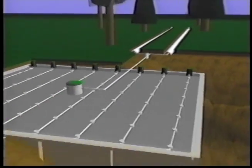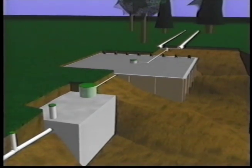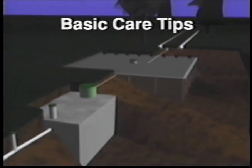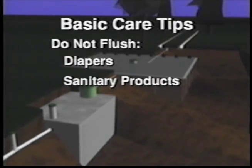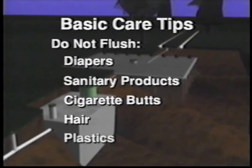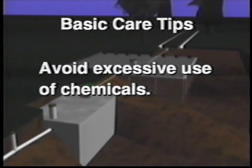Like any household appliance, your ISF system needs some regular maintenance to keep it operating properly. Here are some basic tips for caring for your system. Never flush anything down the drain except toilet paper that hasn't been ingested first. This includes diapers, sanitary products, cigarette butts, hair, and any plastics. Your septic system is a living environment, so avoid excessive use of chemicals and cleaners that can kill the naturally occurring bacteria that treat the wastewater.